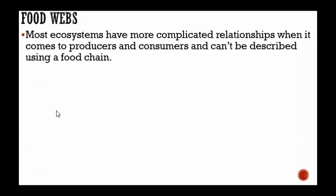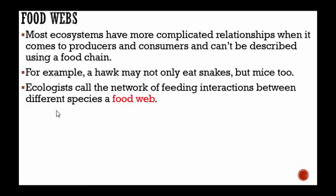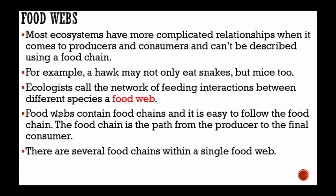Food webs — most ecosystems have more complicated relationships when it comes to producers and consumers that can't be described using a food chain. For example, a hawk may not only eat snakes but may eat mice too. Ecologists call the network of feeding interactions between different species a food web. It's a graphical representation of everything going on. Food webs contain food chains, and the food chain is the path from the producer to the final consumer. There are several food chains within one food web.